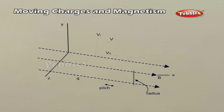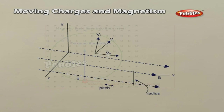If velocity has a component along B, this component remains unchanged as the motion along the magnetic field will not be affected by the magnetic field. The motion in a plane perpendicular to B is as before a circular one, thereby producing a helical motion.